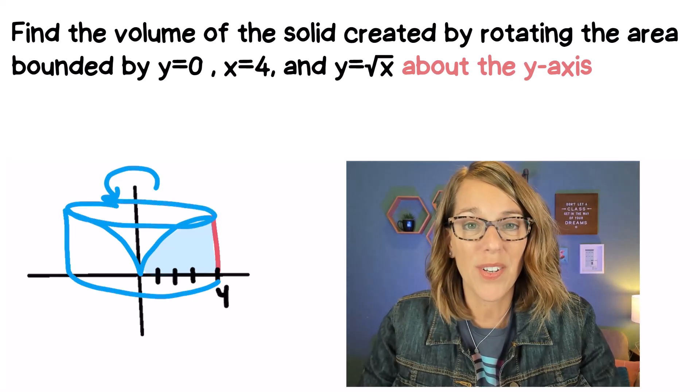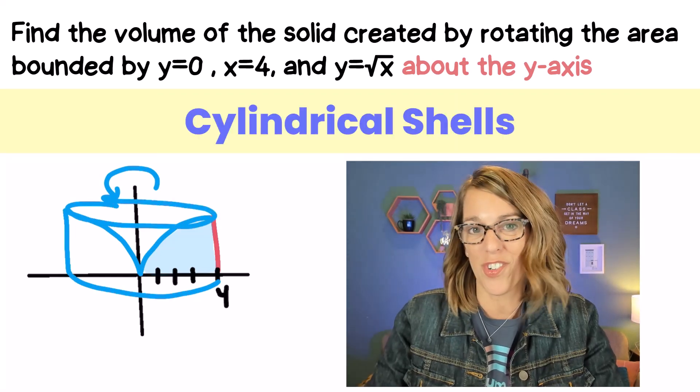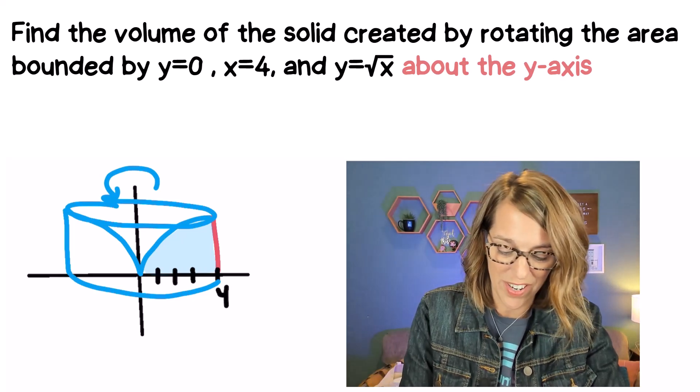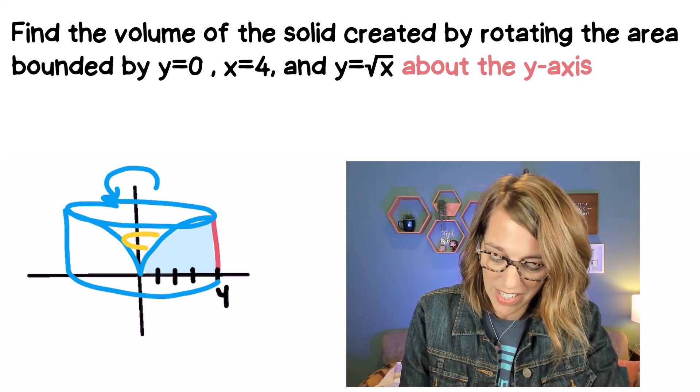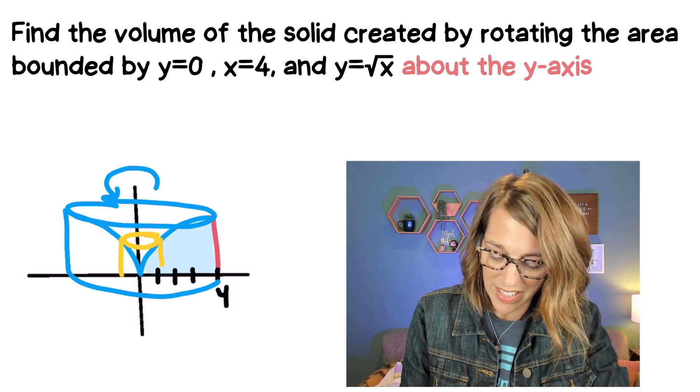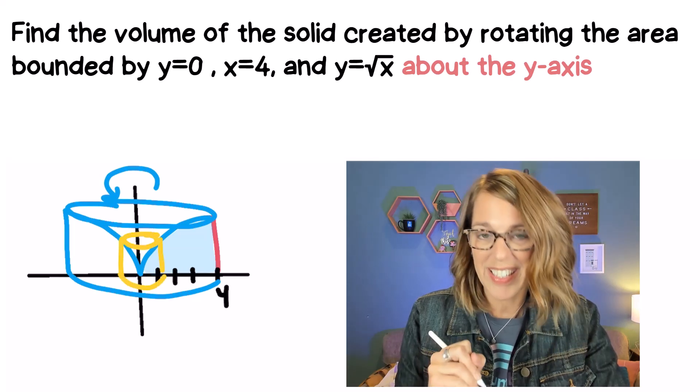In order to find this volume we're going to use cylindrical shells. Let me go ahead and draw one into our figure and the cylindrical shell is going to drop right around the axis of revolution sitting like this.